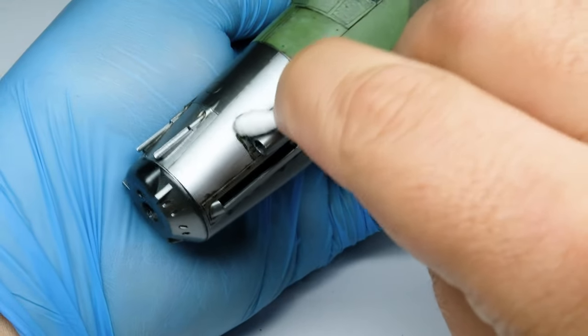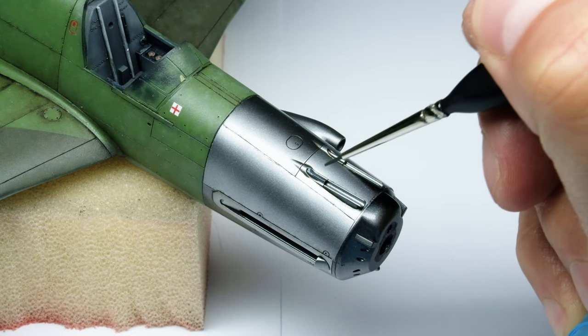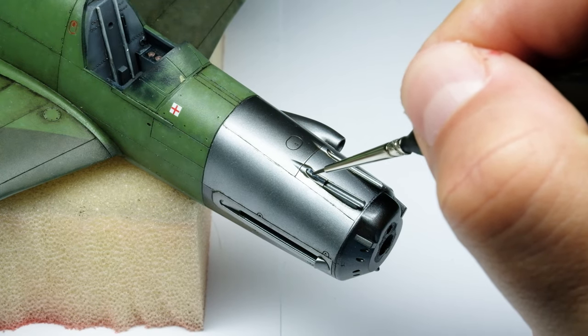Now on to the other small parts of the DO 335. This is where I often lose my mojo in finishing my scale models. But not this time.